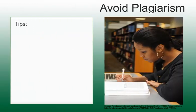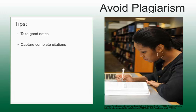Here are a few tips to avoid plagiarism. Take good notes on where you found specific ideas, opinions, and conclusions. Write down or include complete citation information for each item used. Use quotation marks when directly stating another person's words. Avoid patchwriting or simply combining phrases drawn from several sources. Instead, write summaries and paraphrases in your own words and then cite where they came from.